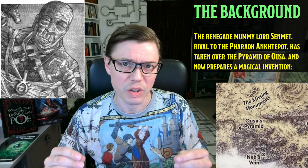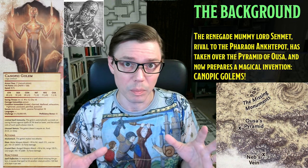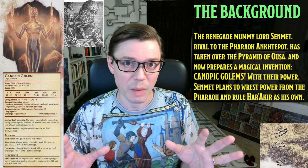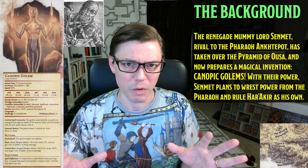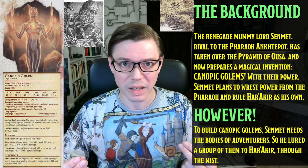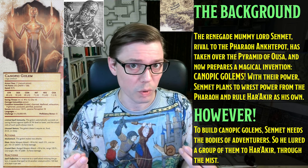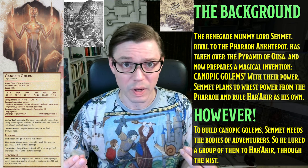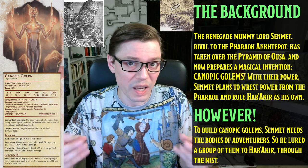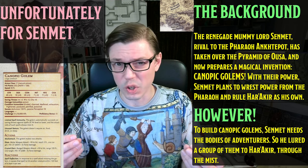Here's the background. The renegade mummy lord Senmit, rival to the Pharaoh Onctopot, has taken over the Pyramid of Usa and now prepares a magical invention: Canopic Golems. With the construction of Canopic Golems, Senmit believes he will be able to take over Har Akir and wrest power from the Pharaoh Onctopot. However, to create Canopic Golems, Senmit needs some powerful ingredients — he needs some adventurers. So he carefully lured a group of adventurers through the mists of Ravenloft into Har Akir.